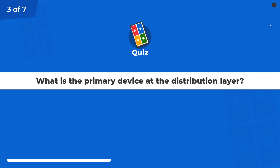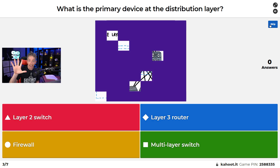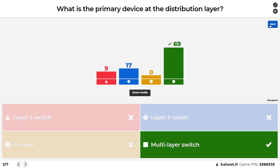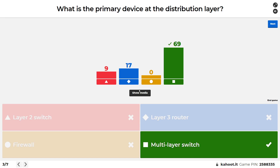Question three of seven: What is the primary device at the distribution layer? At the distribution layer the primary device is a multi-layer switch. I'll hold back on saying too much more about the three-tier hierarchical model because there are one or two more questions on it — only four more questions to go.